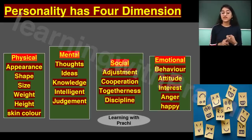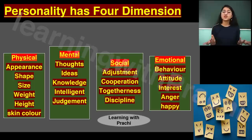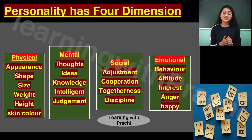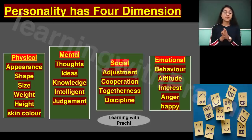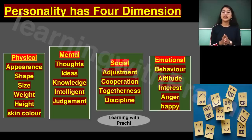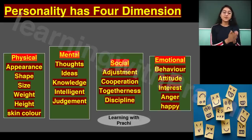All these things come under the social dimension. The last dimension is emotional, which includes a person's behavior, attitude, interest, anger or happiness — whether they get happy or sad quickly, whether they get angry easily or stay calm, what their interests are, whether they cry easily or are emotionally stable. All these things together make up personality.